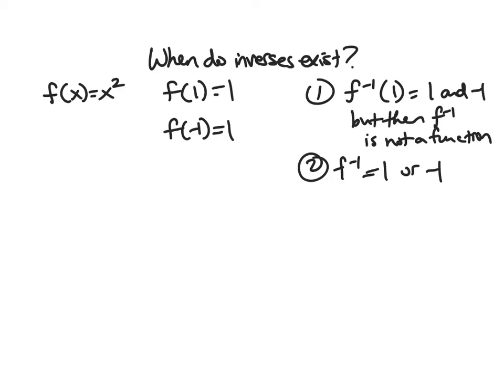But then this is also a problem because, well, why one and not the other? I seem to be losing information. So that's not really good either. And so x squared is actually a function that does not have an inverse. And it's because I have two inputs going to the same output.